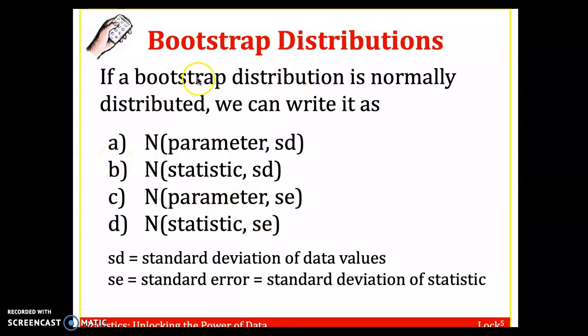You have to go back to chapter three when we created bootstrap distributions. We always want to make sure the statistic is the center of your distribution. So it's got to be B or D, and we want to figure out how much the possible samples could vary. That is the standard error. So the center of the normal distribution will be the statistic, and the standard error is the spread, the standard deviation of your normal distribution.